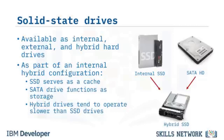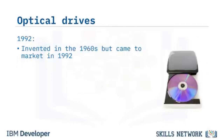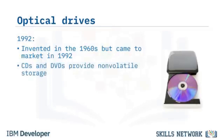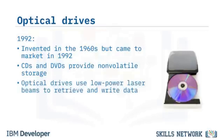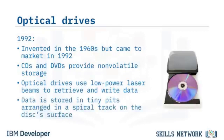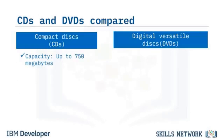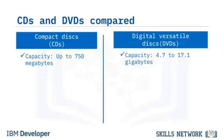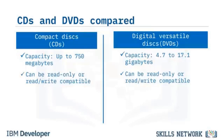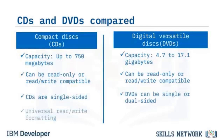Optical drives, which use compact disks or CDs and digital-versatile disks or DVDs, were invented in the 1960s and came to market in 1992. These drives provide non-volatile storage. Optical drives use low-power laser beams to retrieve and write data, encoding data in tiny pits arranged in a spiral track on the disk's surface. CDs are suitable for storage up to 750 megabytes. DVD storage ranges from 4.7 gigabytes to 17.1 gigabytes. CDs and DVDs can be read-only or read-write compatible. CDs are single-sided, but DVDs can be single or dual-sided. DVD player formatting happens by region.